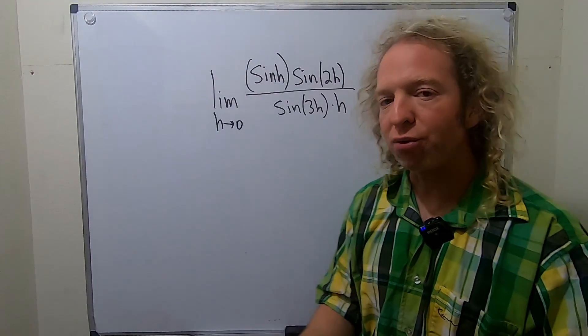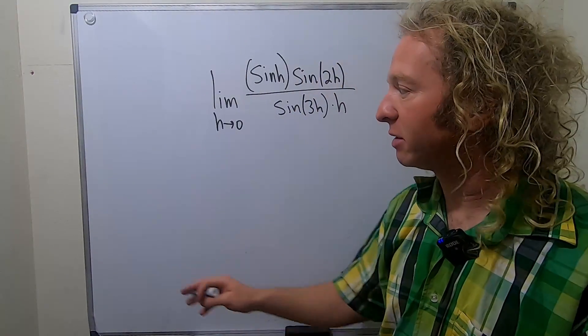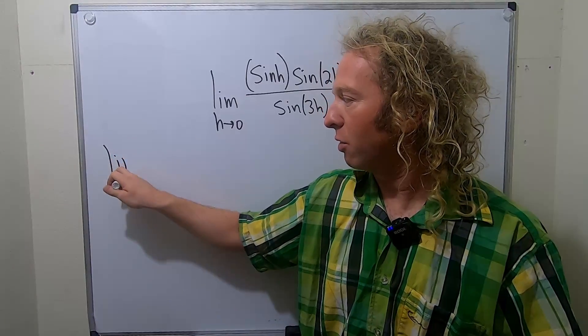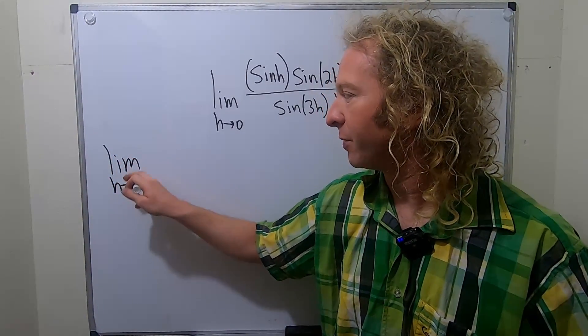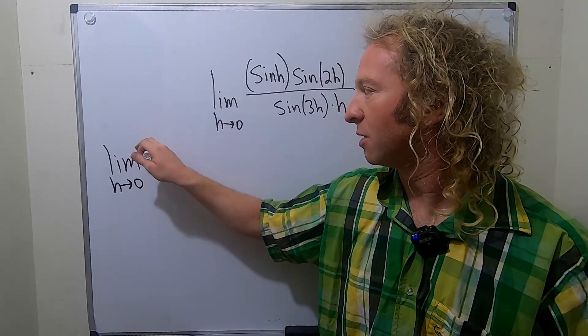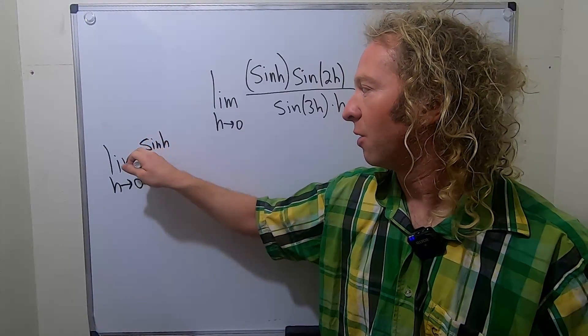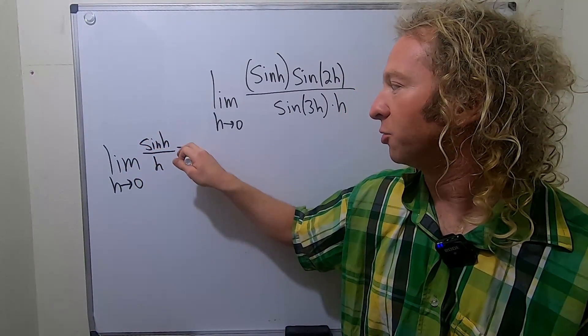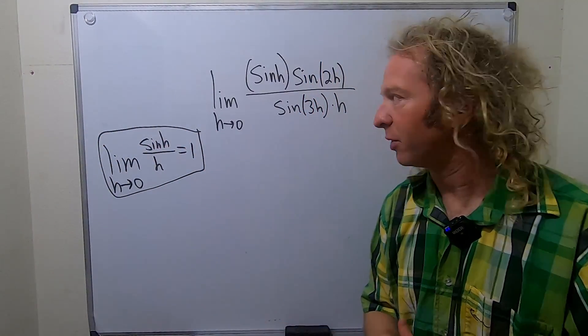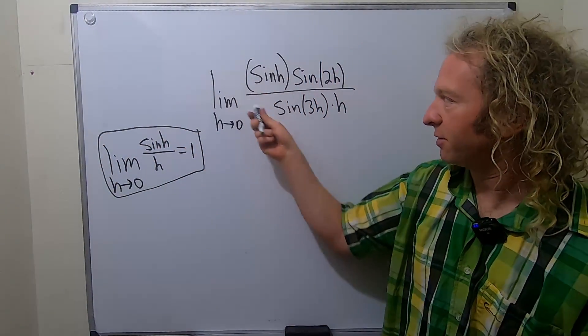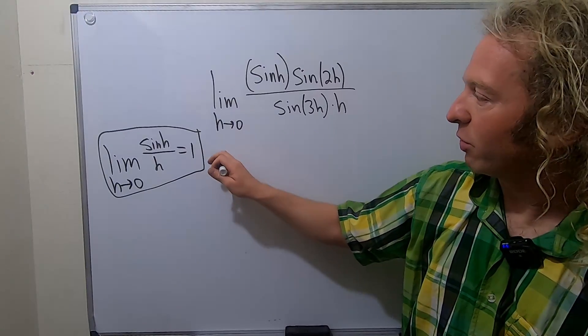So to do this problem, I'm pretty sure that we can use a limit. If you know that the limit as h approaches 0 of the sine of h over h is equal to 1, then in theory we should be able to do this problem. So I have some ideas. First of all, let's rewrite it.